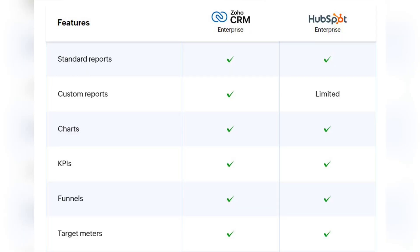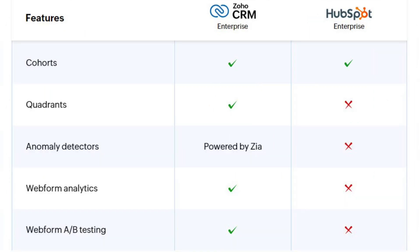Moving on to analytics and reporting, which is a crucial criteria for any type of business, because you need deep analysis of all the different sales processes inside your company to have valuable insights and make data-driven decisions. Both Zoho and HubSpot offer standard reports, custom reports (which are a bit limited in HubSpot), charts, KPIs, funnels, target metrics and cohorts. However, HubSpot lacks some analytic features such as quadrants, anomaly detectors, web form analytics and web form A/B testing.